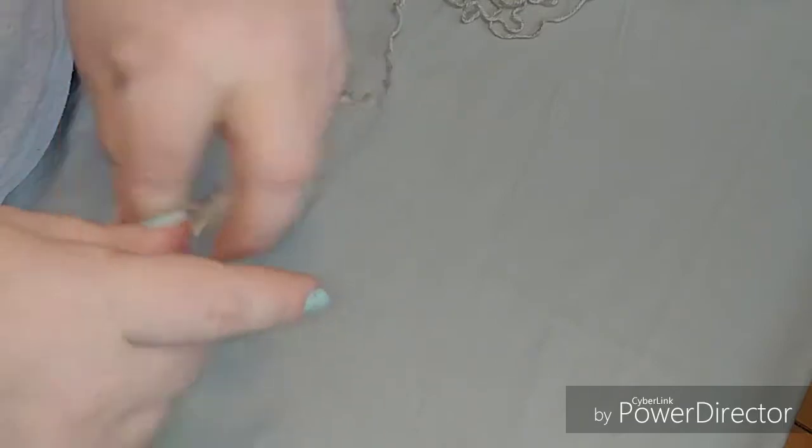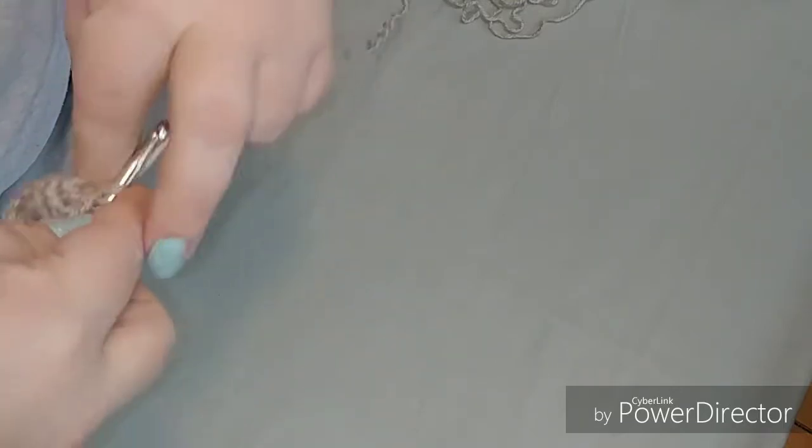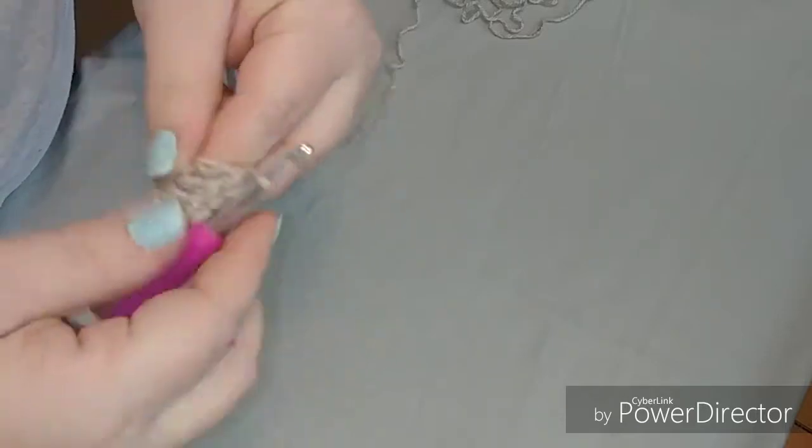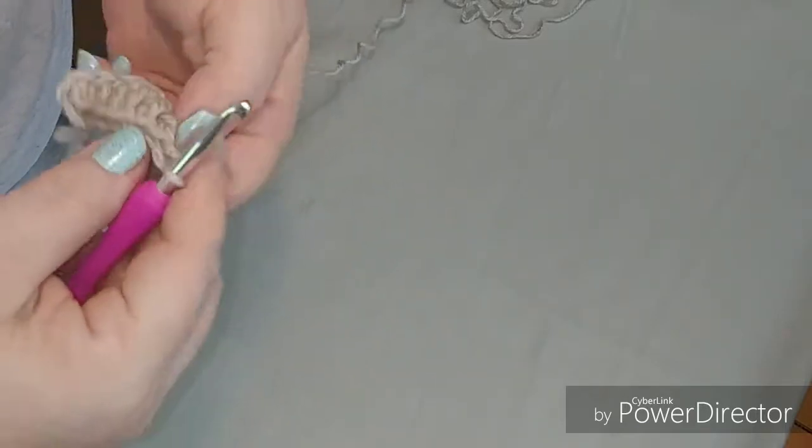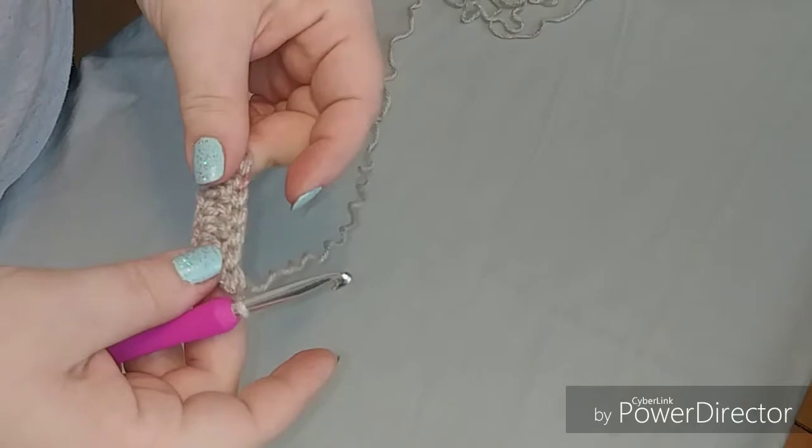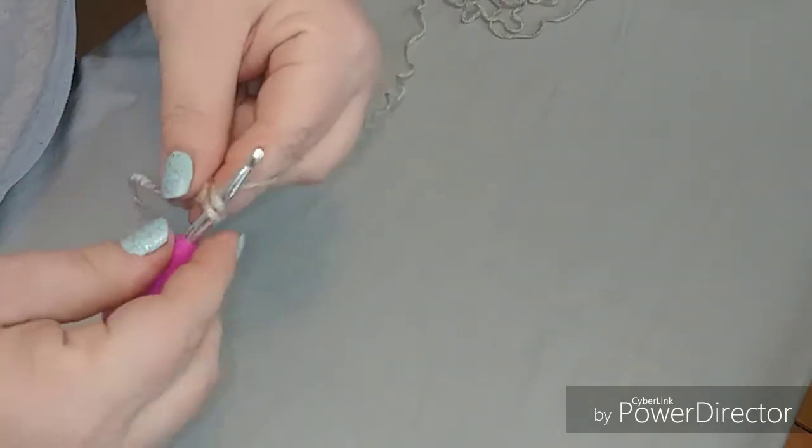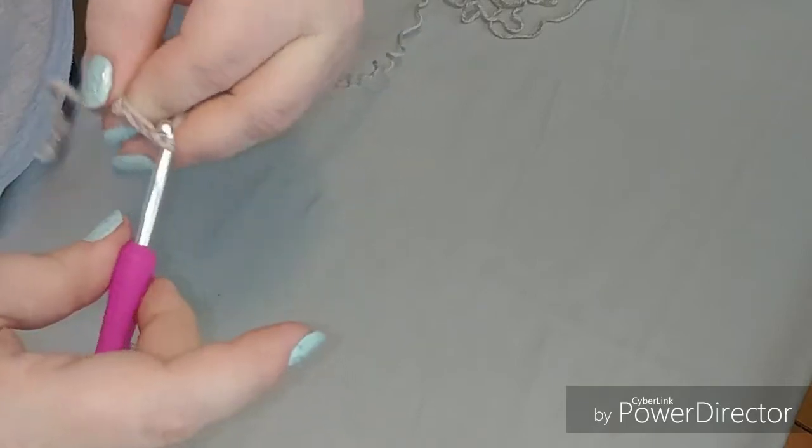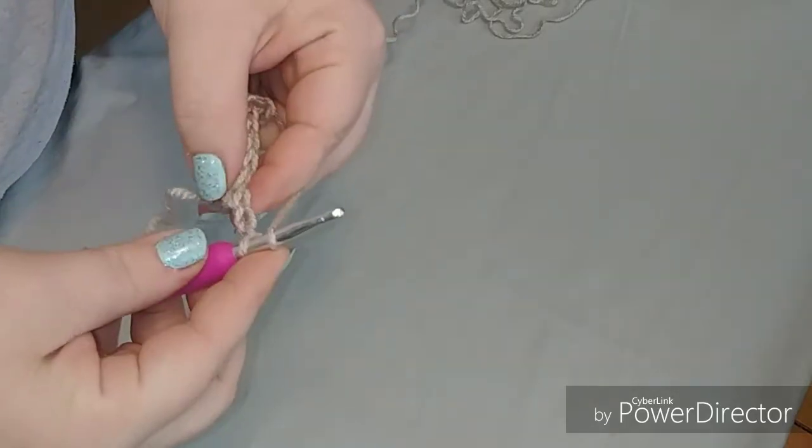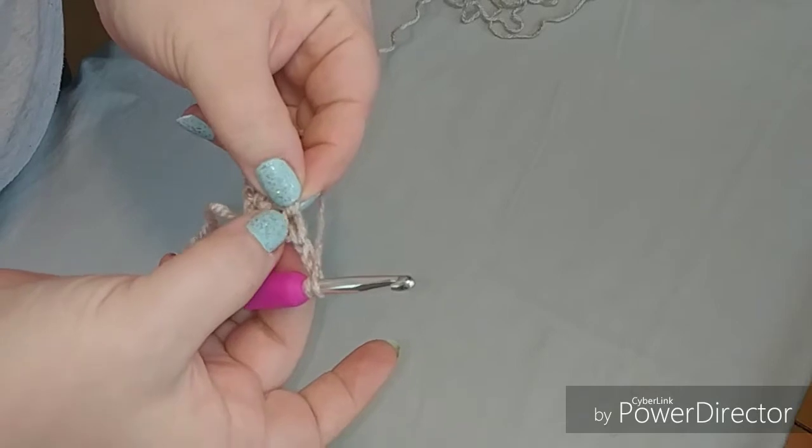All right, last chain. When you're doing double crochet, when you get to the end, you want to turn your project and you're going to chain two. Okay, then you're going to wrap, and then you're going to go in at the top here.